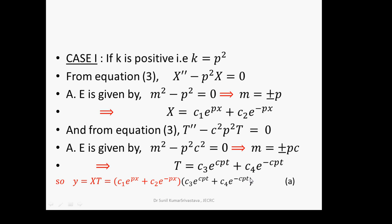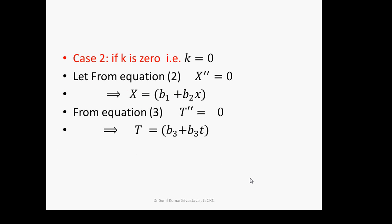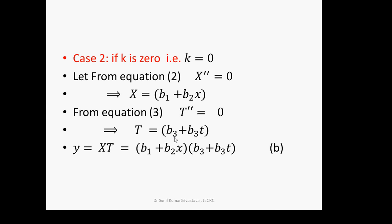Case 2: k = 0. Then X'' = 0, giving repeated roots m = 0, 0, so X = b₁ + b₂x. Similarly T'' = 0, giving T = b₃ + b₄t. The solution in this case is y = (b₁ + b₂x)(b₃ + b₄t).